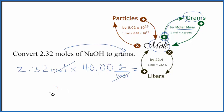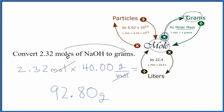We multiply these together and we get 92.80 grams of sodium hydroxide in 2.32 moles. If we were given grams and wanted to get to moles instead of multiplying, we'd divide.